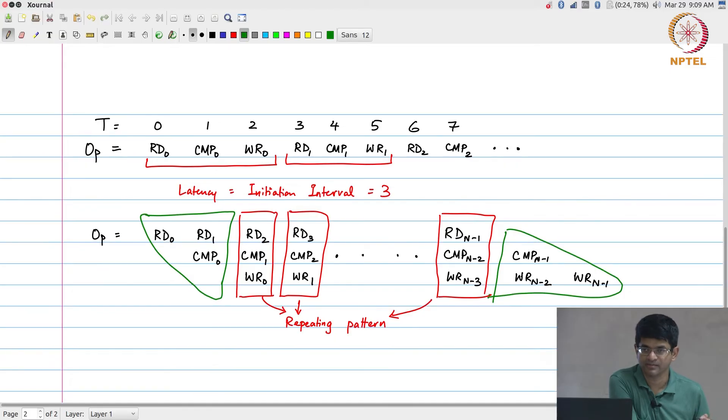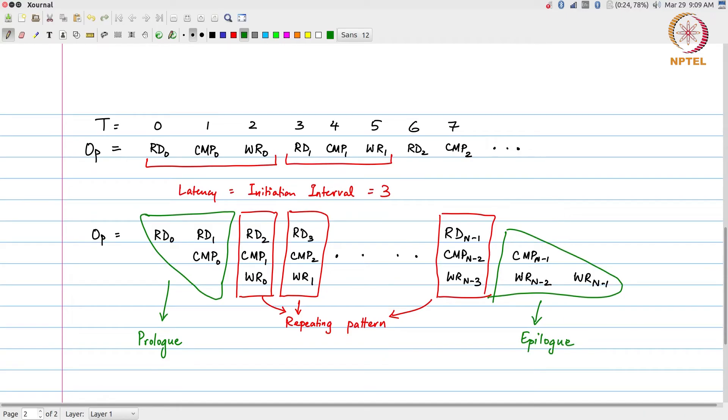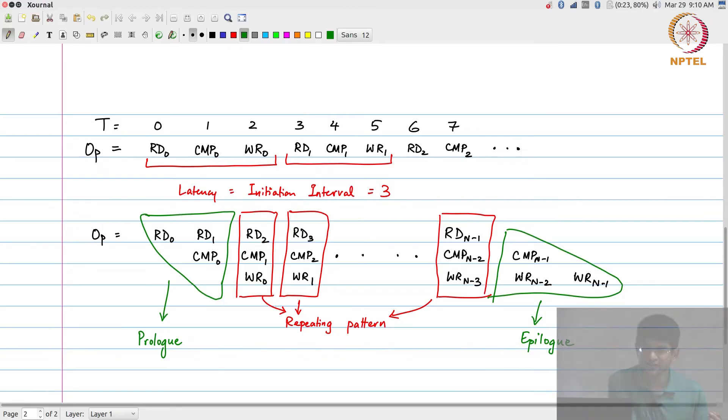The term that is used for this is to say this is the prologue, and similarly you have the epilogue at this end. The prologue is something that happens before the main work, the epilogue is something that happens at the end after the main story has completed. What you can see is, provided that n is sufficiently large, the overhead required for prologue and epilogue are small, and the effective initiation interval that I have got is 1.